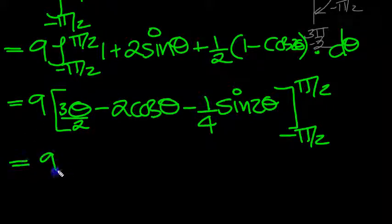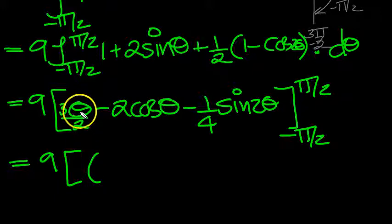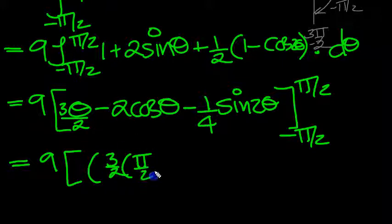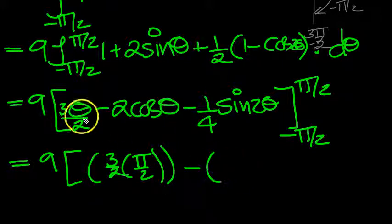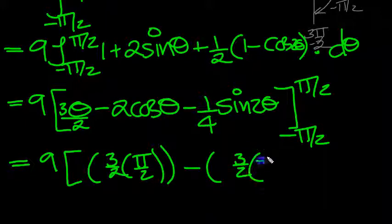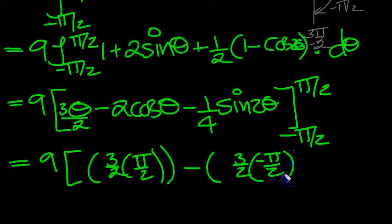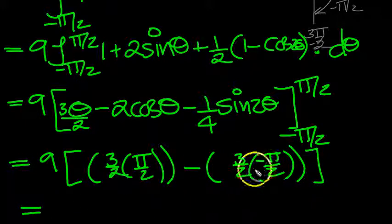So it's equal to 9 then. Top value: put pi over 2 in here, we'll get 3 over 2 times pi over 2. That's the top value input here. Take away the bottom value, which is 3 over 2, and then we put in minus pi over 2. Close the square bracket. So we've got two lots of this, effectively.